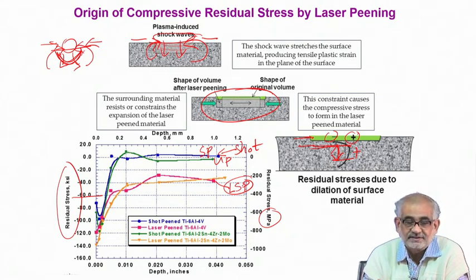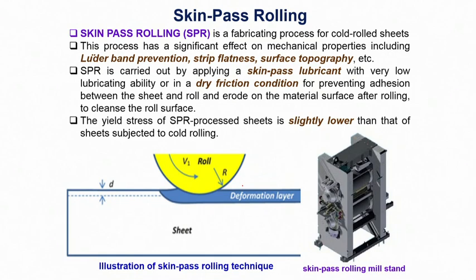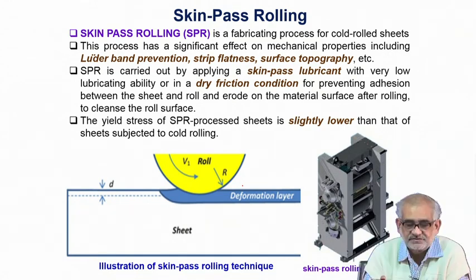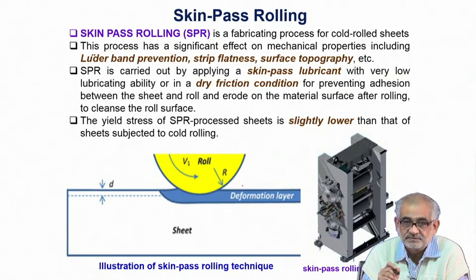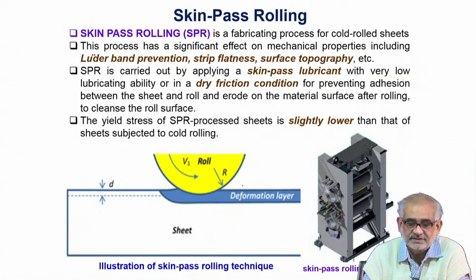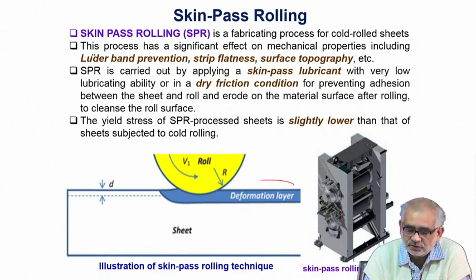Another type of possibility for introducing residual compressive stress onto the surface is simply deformation through rolling. Whether you hit with a projectile, a striker propelled by an ultrasonic wave, or a plasma shock created by ultra-fast laser vaporization, in all these cases the net effect is certain deformation onto the surface up to a certain depth. One can also achieve deformation simply by rolling the material.